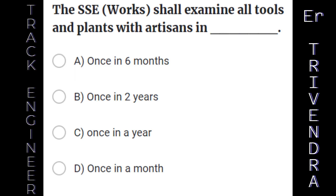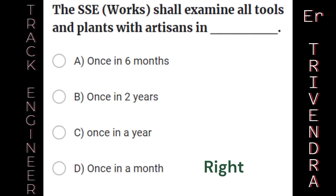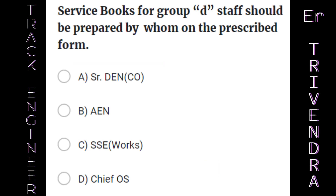The SSE (works) shall examine all tools and plants with artisans: A. Once in 6 months. B. Once in 2 years. C. Once in a year. D. Once in a month. The right answer is: once in a month.